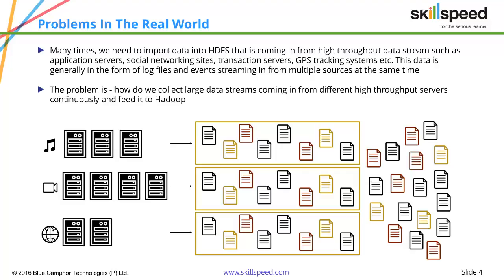The data we are concerned with is things such as log files, event streams, etc. The real problem is how we collect large data streams coming in from different high-throughput servers continuously and feed it into Hadoop. For example, imagine you want to pull all the tweets about Barack Obama today and dump them into Hadoop. We need an efficient system to search, categorize that feed, and continuously transport it into Hadoop.